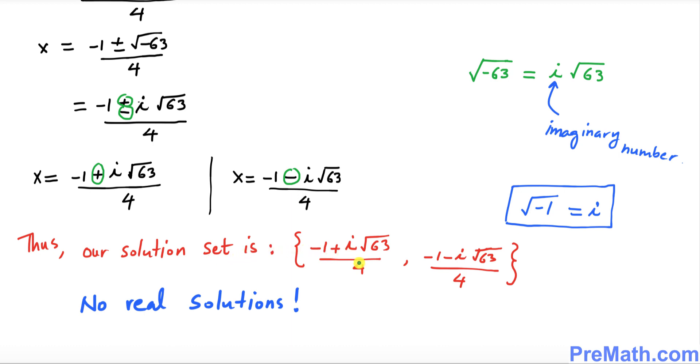So thus our solution set is right up here and this is our answer. And since we have i imaginary numbers involved in both solutions, that means we have no real solution. That means these solutions are not real.